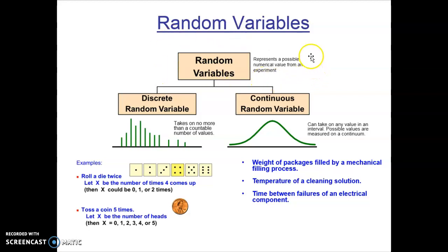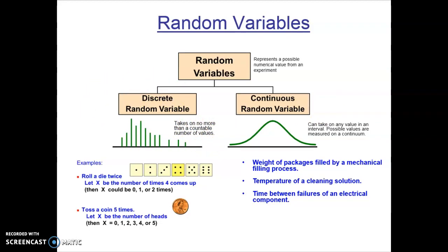Random variables represent a possible numerical value from an experiment. They can be discrete or they can be continuous. Discrete random variables are always countable. For example, if I'm studying the distribution of children across US households I might create discrete random variables — how many households have zero children, how many have one child, how many have two children, and so on.